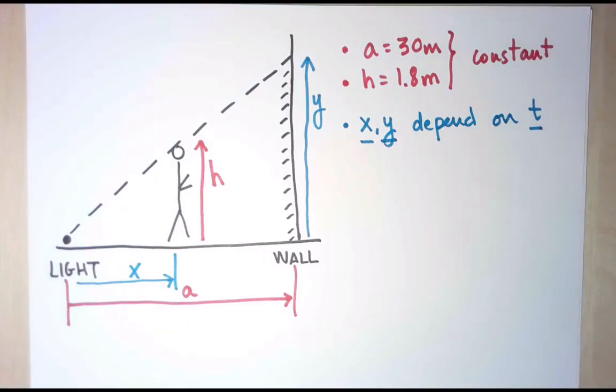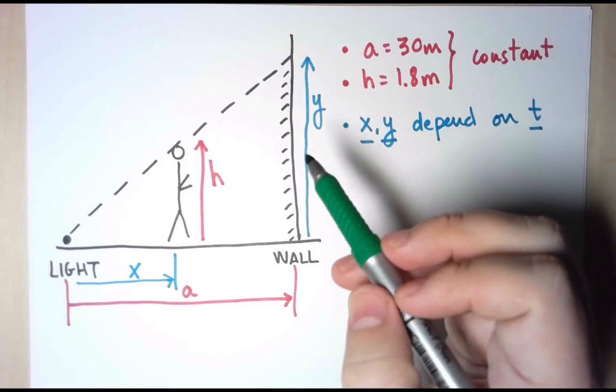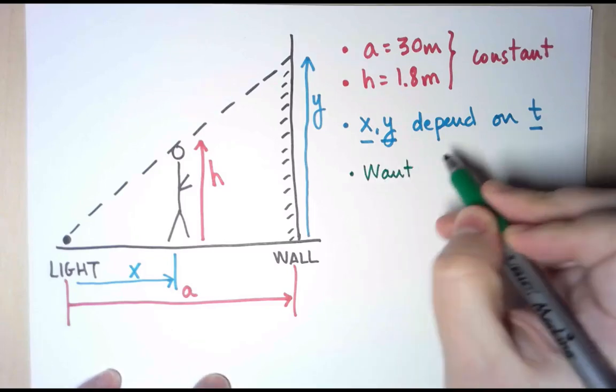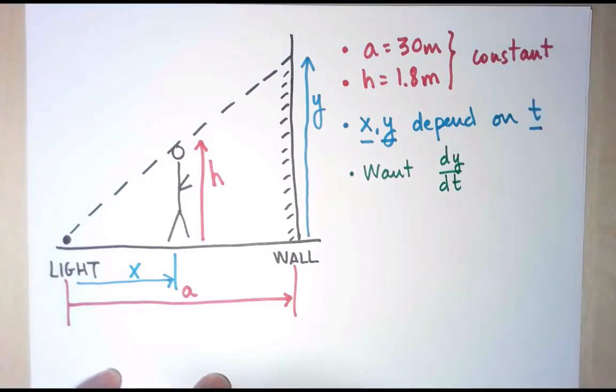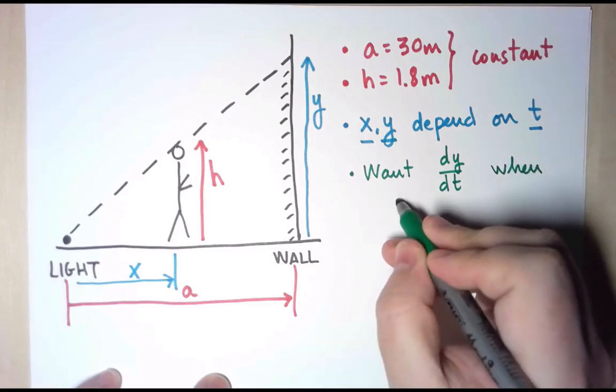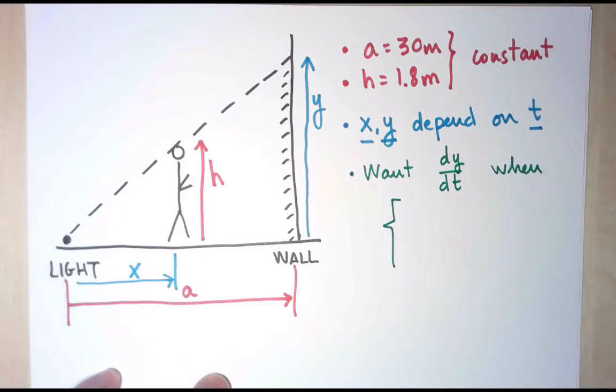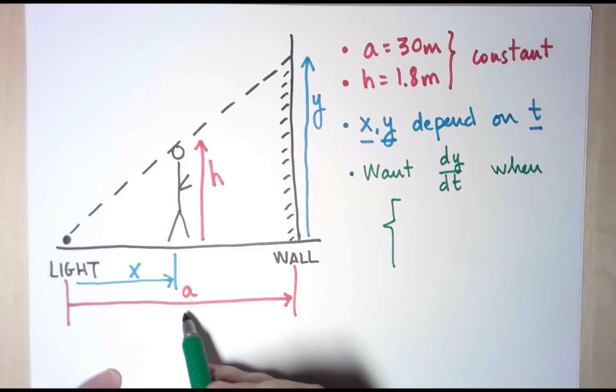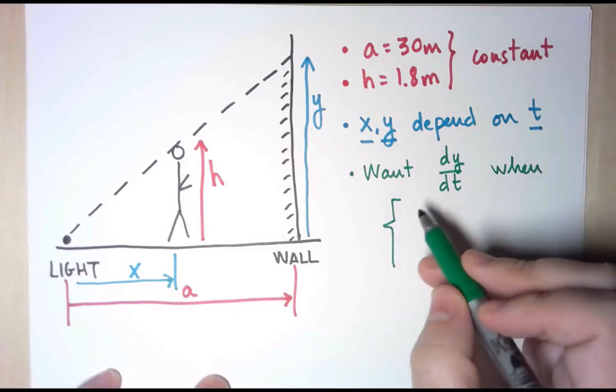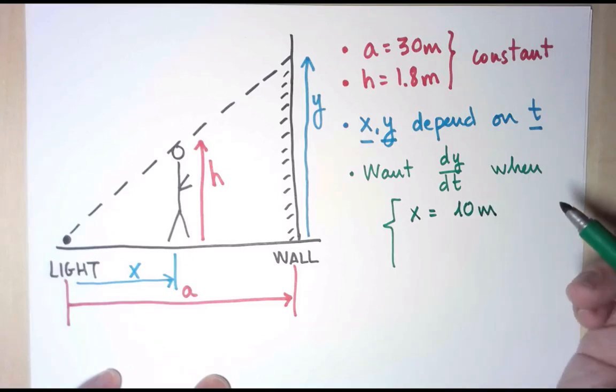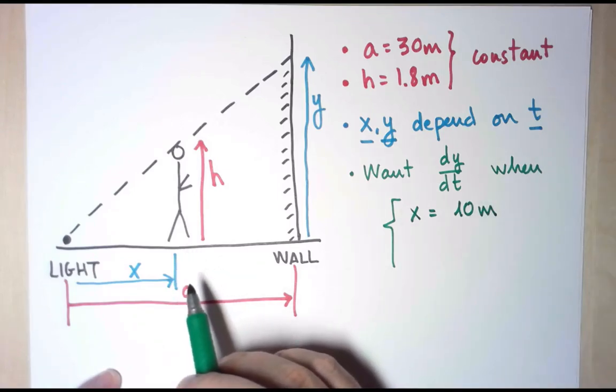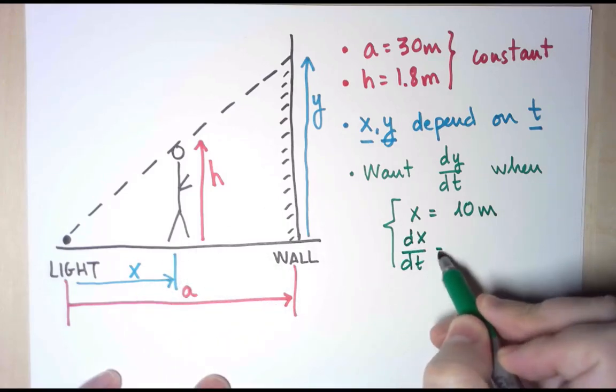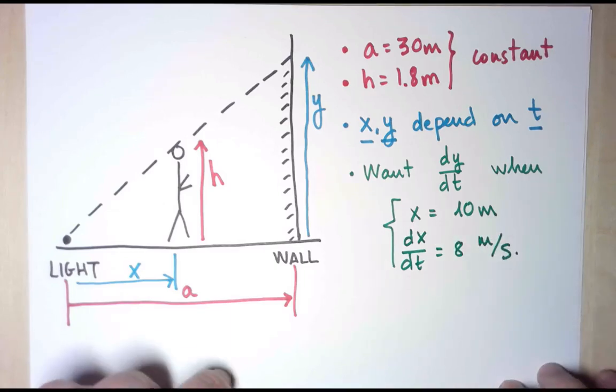Now, what do we want to compute? We want to find out how fast is the height of the shadow on the wall changing. That is, what I want is the derivative of Y with respect to t, with respect to time. And I want to find this at a moment when the prisoner is 20 meters away from the wall. But since A was 30 meters, that means that X is 10 meters. So at a time when X is 10 meters, and the prisoner is running at 8 meters per second. The velocity of the prisoner is the derivative of its position. So that is, dx with respect to t is 8 meters per second.